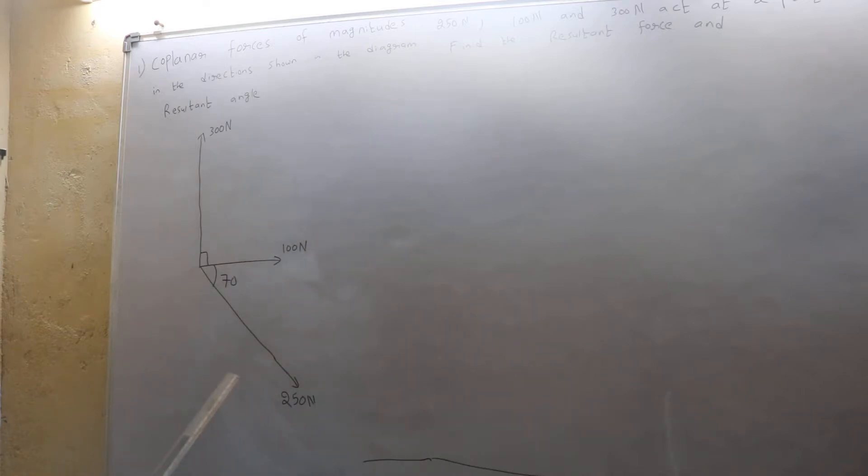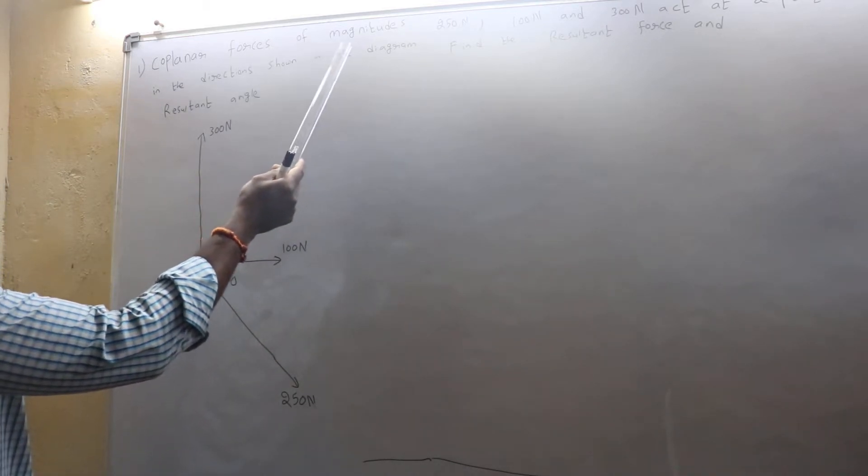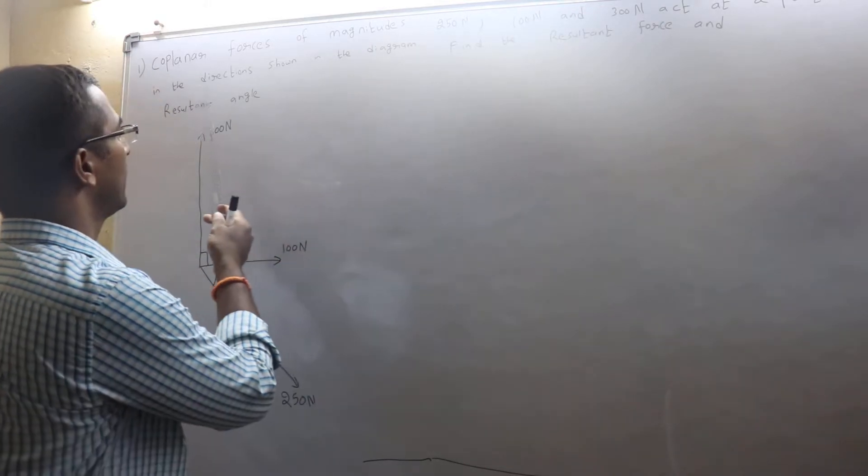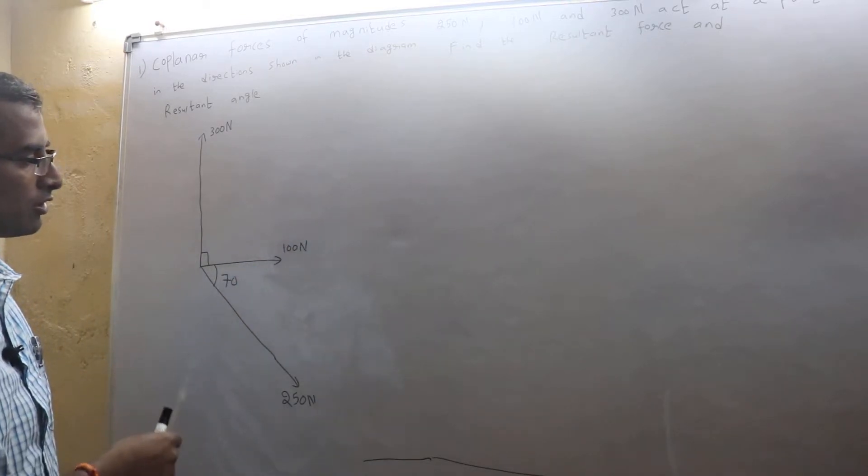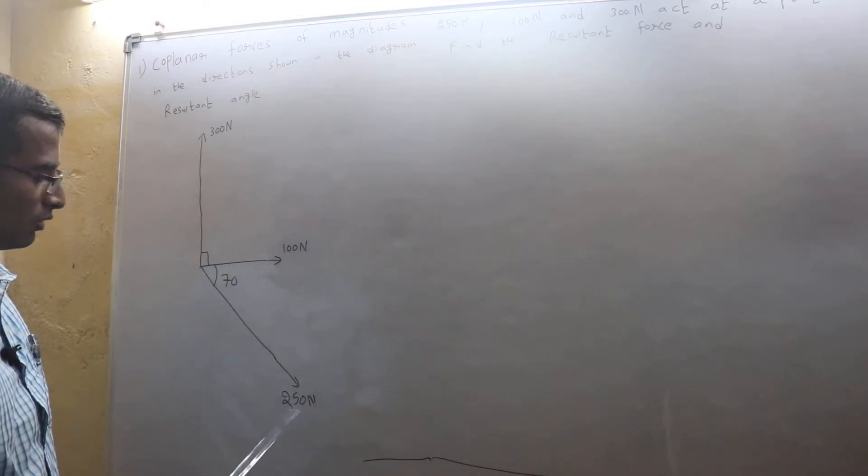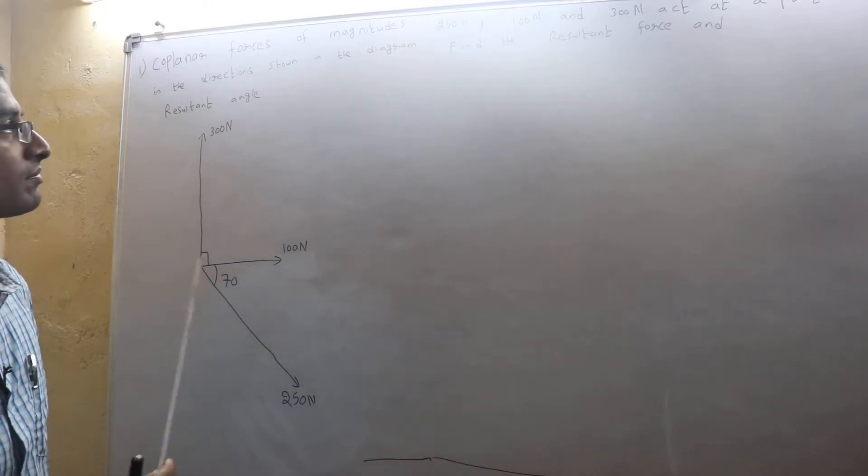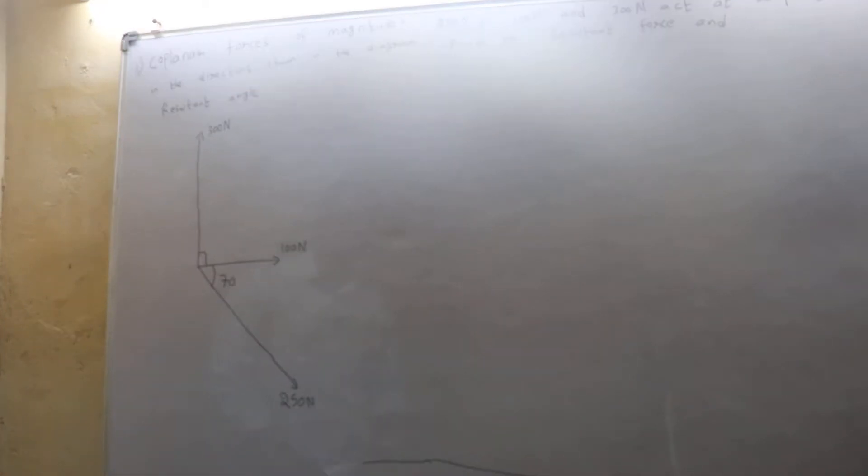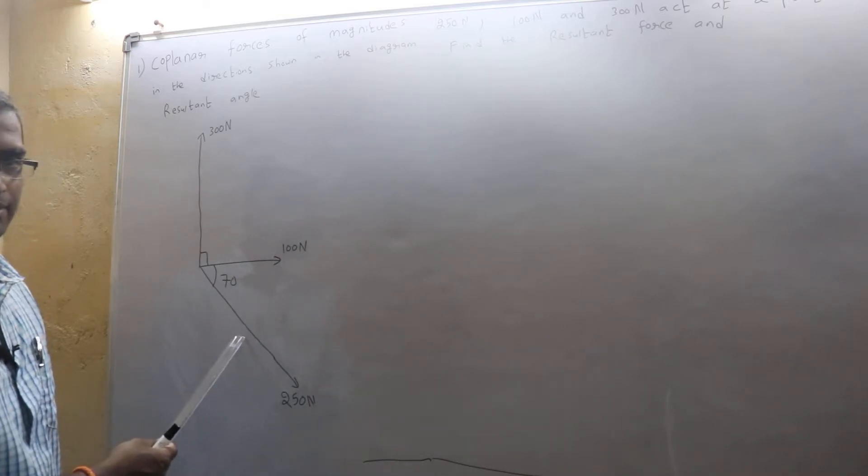Let's look at the next sum. Coplanar forces of magnitudes 250, 100, and 300 act at a point in the directions shown in the diagram. So this is the diagram: 250, 100, 300 newtons are as shown. Next, find the resultant force and the resultant angle. In the exam, a diagram will also be given.